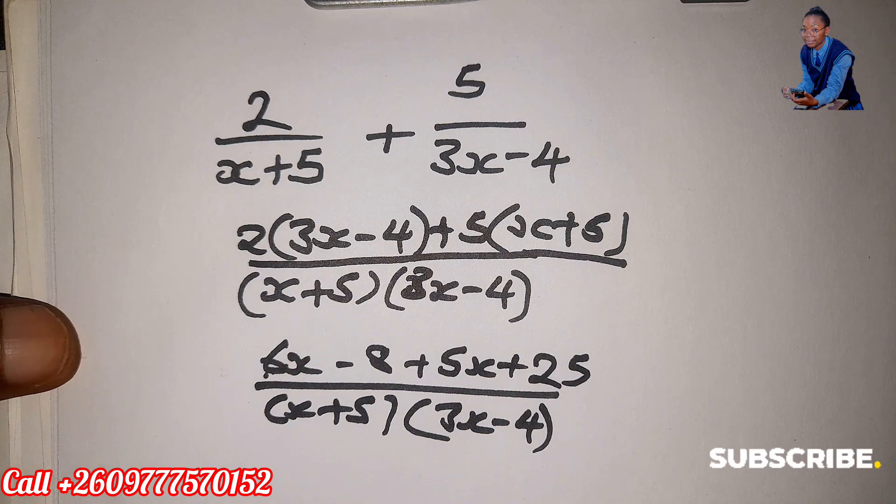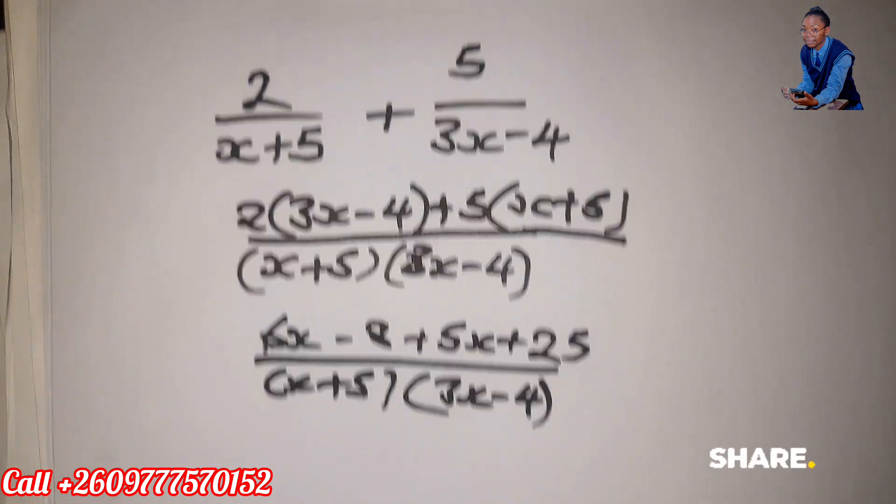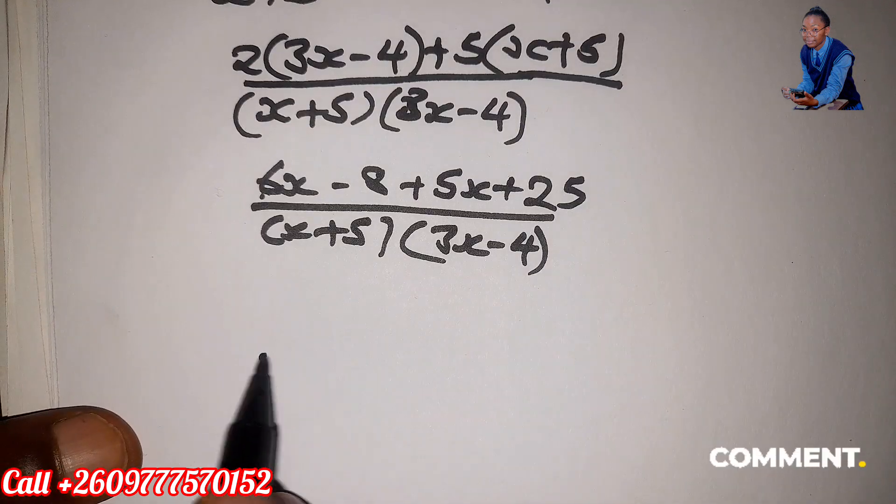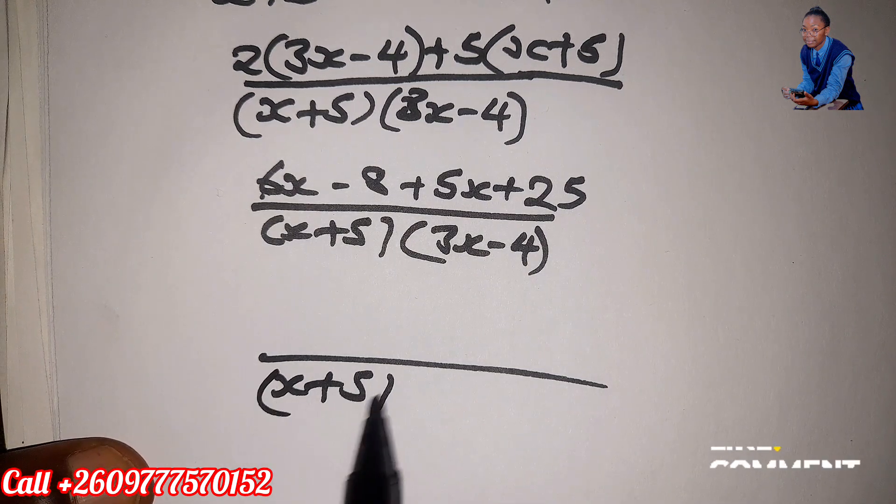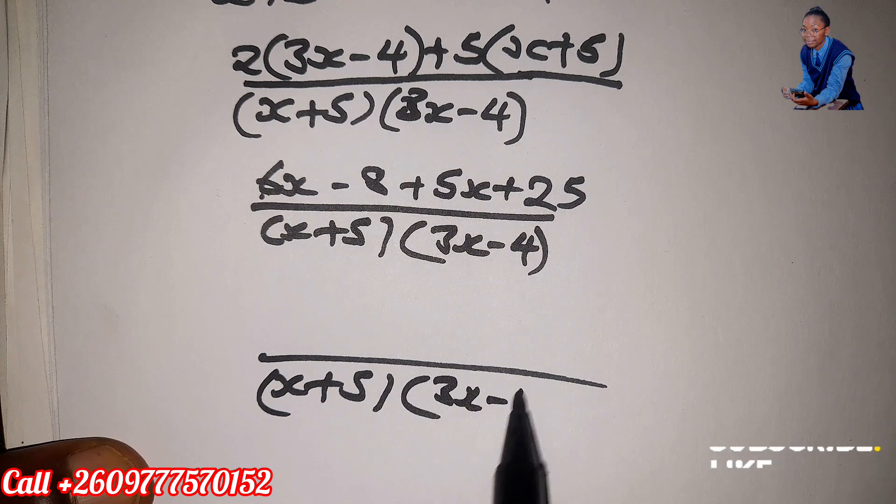25. Okay, then we write x plus 5, 3x minus 4.